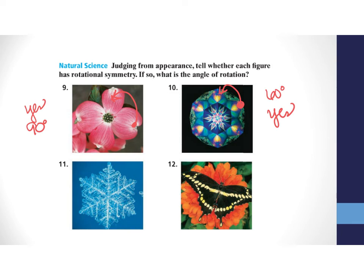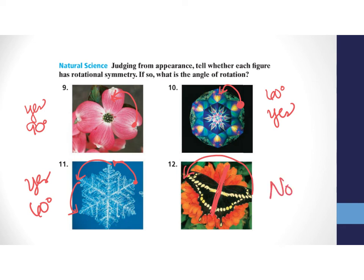For the snowflake in number eleven, moving one point to the next gives the same image. Dividing 360 by 6 gives 60 degrees, so yes, it has rotational symmetry with a 60-degree angle of rotation. For number twelve, the butterfly has symmetry but not rotational symmetry — rotating one wing over to the other side does not produce the exact same image, so the answer is no.